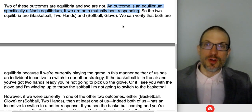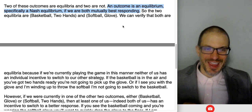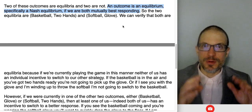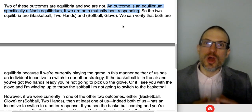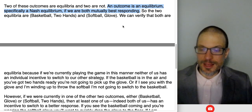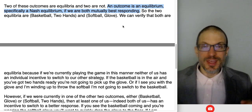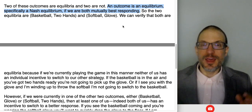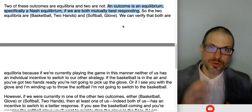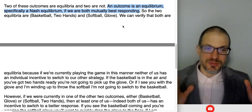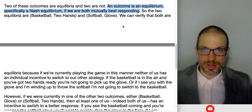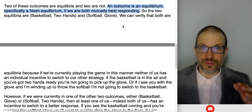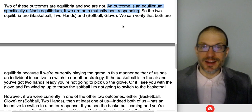There's a collection of different outcomes: I throw the softball, you catch with two hands; I throw the softball, you catch with glove; I throw the basketball, you catch with two hands; or I throw the basketball, you catch with glove. There are four possible outcomes for the game, but only two that are stable equilibria. If the basketball was coming and you had the glove, you'd want to change your strategy — you would not currently be best responding. So that outcome would not be a Nash equilibrium. Similarly, if I throw the softball and you're catching with two hands, you'd want to quickly grab the glove — so that's not a Nash equilibrium either.